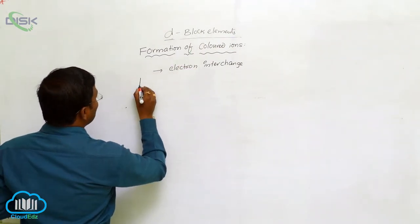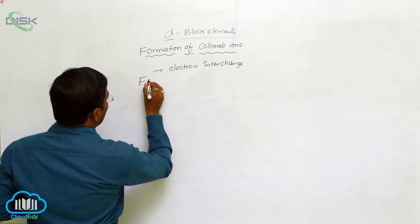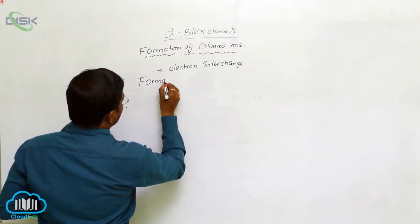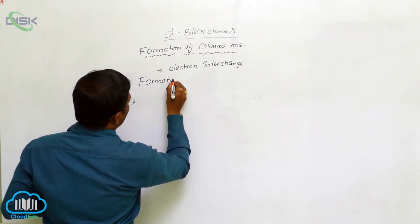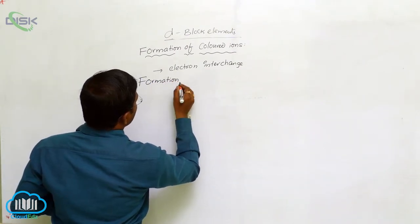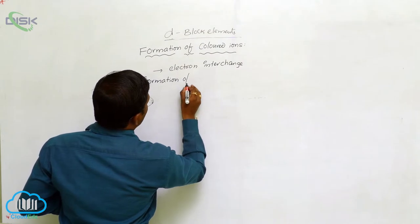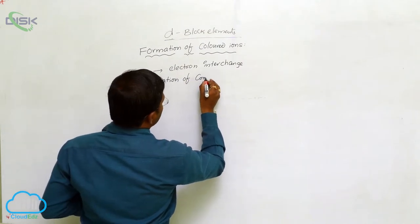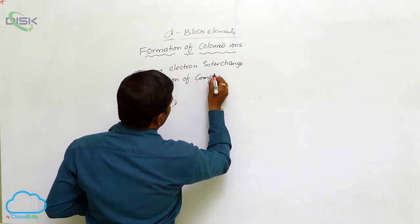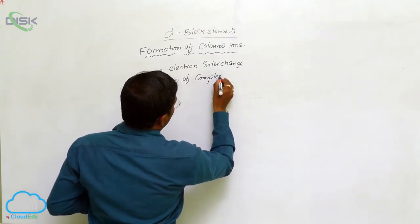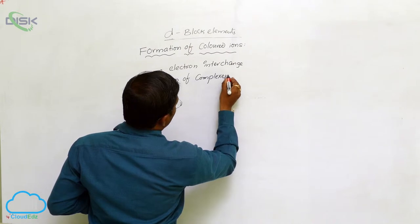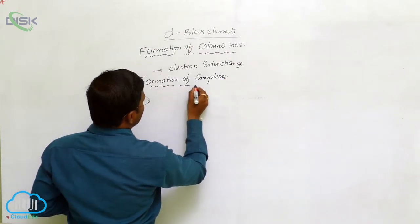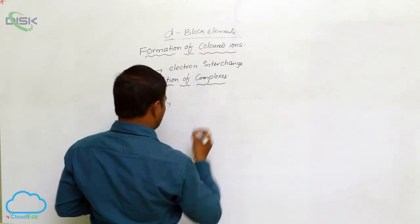Formation of colored ions is due to the absorption of visible light, as identified in d-block elements. The next and most important property of d-block elements is the formation of complexes.